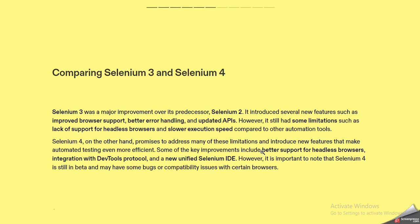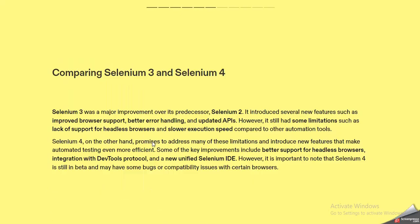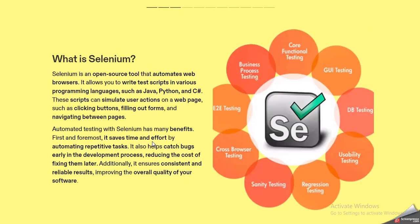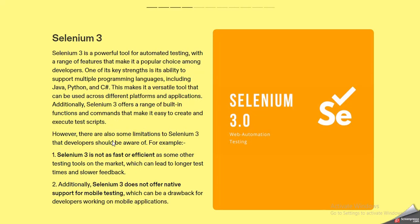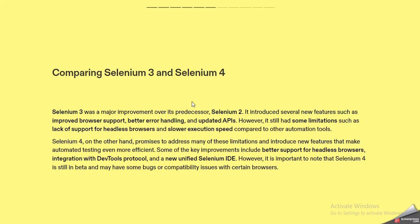The architecture is one of the most important points to explain to the interviewer. As a revision: first explain what is Selenium and its usage, then the features of Selenium 3 and its limitations, then explain that Selenium 4 was launched to overcome those limitations with additional features, and then compare Selenium 3 with Selenium 4 keeping those drawbacks in mind.